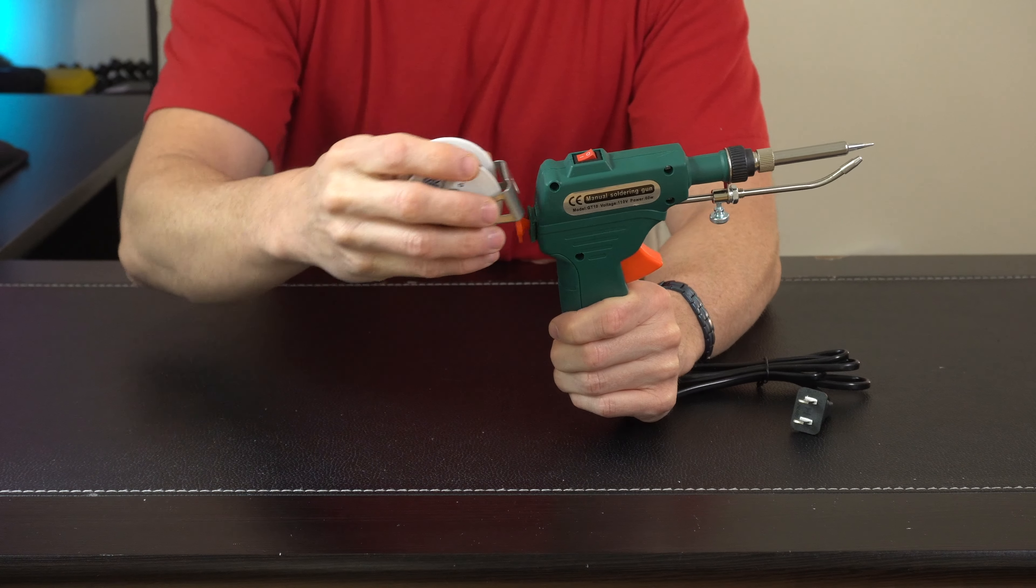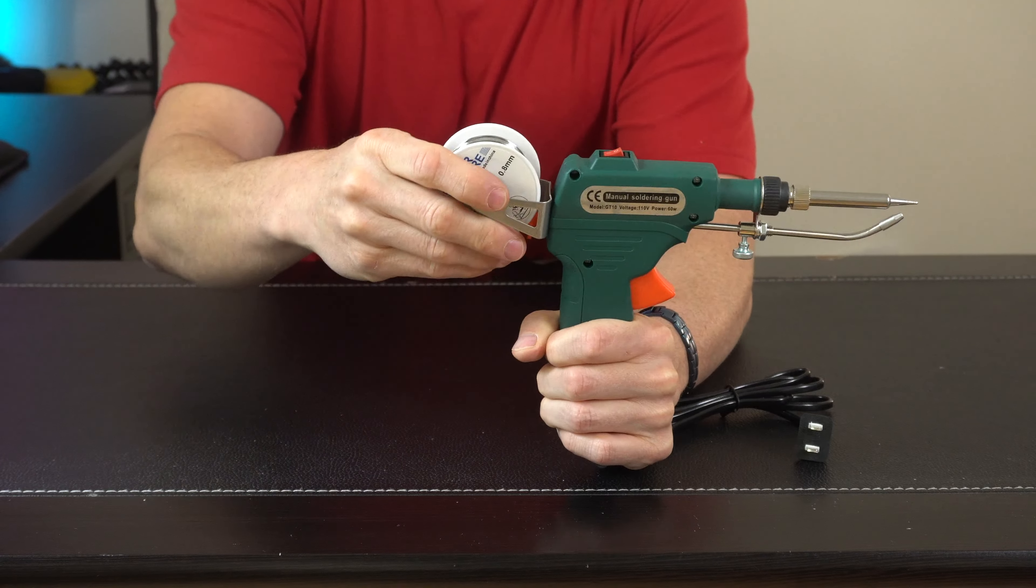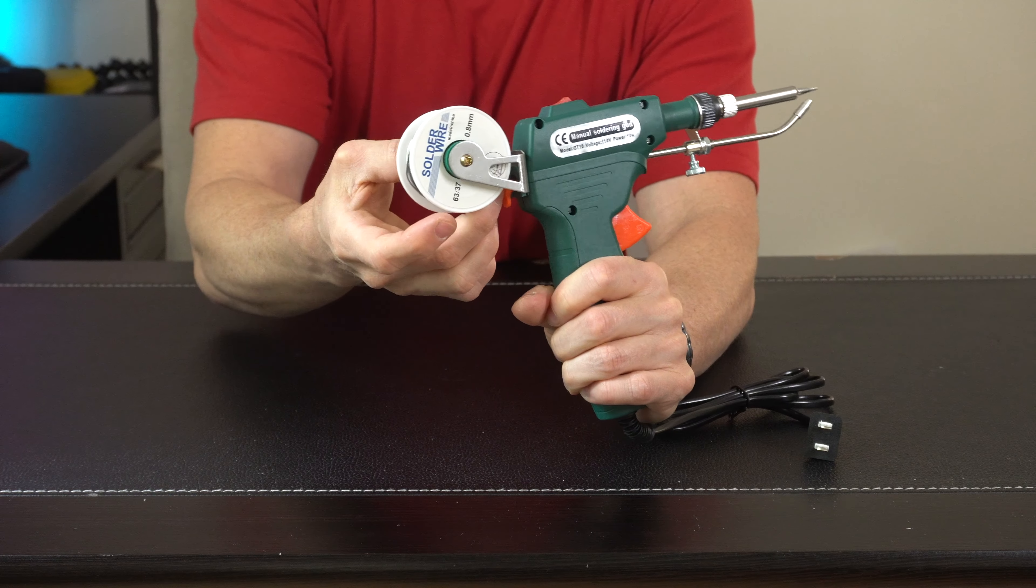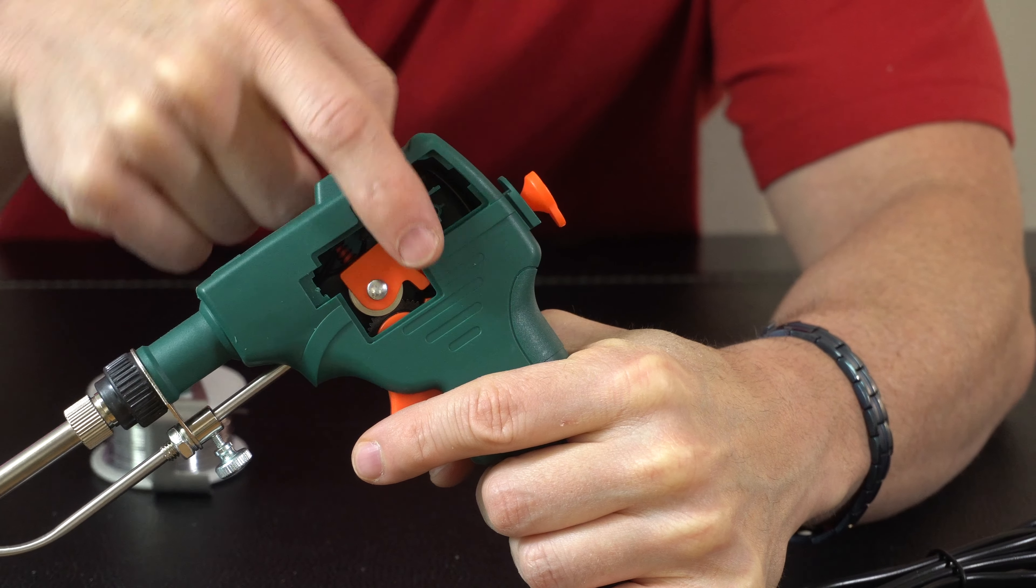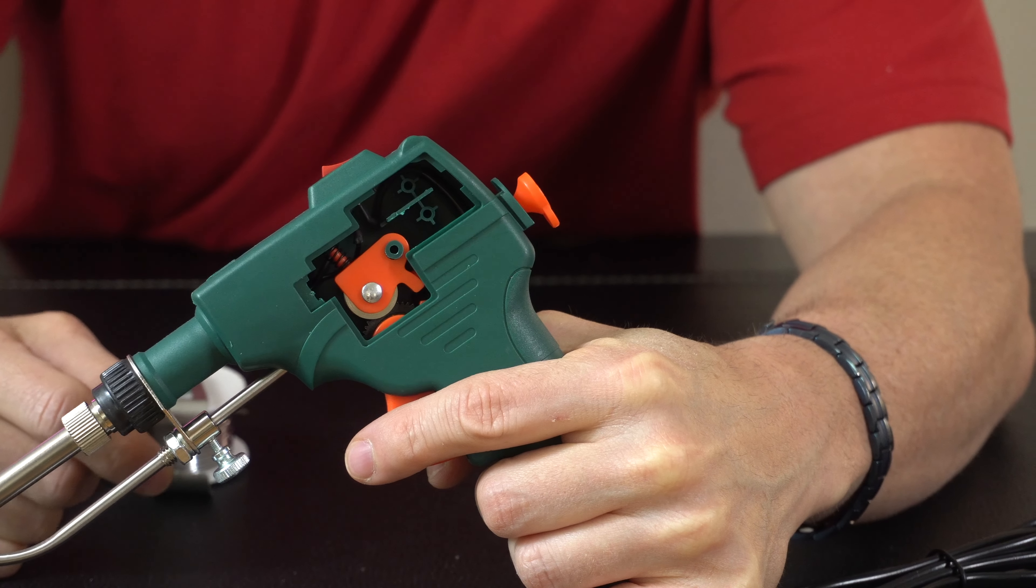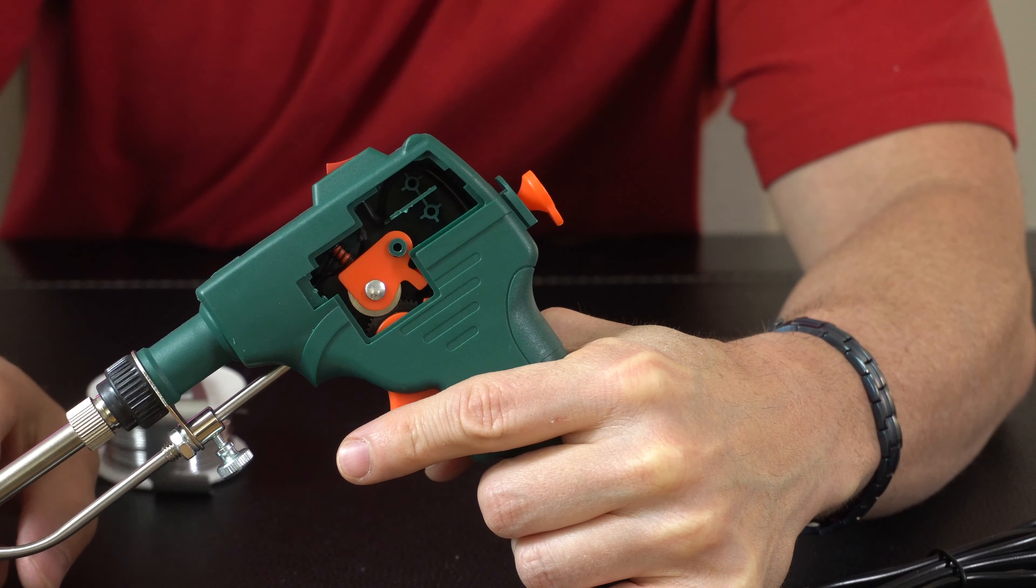So you just load the solder onto the spool and that slides right over here as a little bracket back there that's going to hold it. Then we're going to be able to feed the solder through the little cone underneath here. And what you'll see if you take the side cover off is that you feed it in through the back, it's going to start to go through these gears or a feeder. And as you pull the trigger, it's going to feed it forward and then out of the front too.